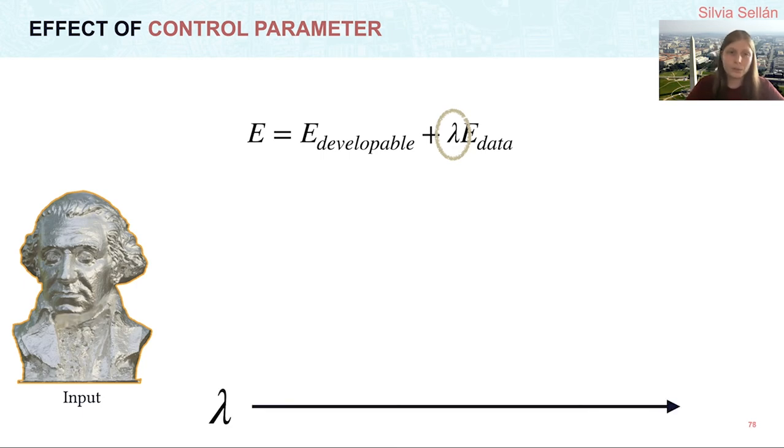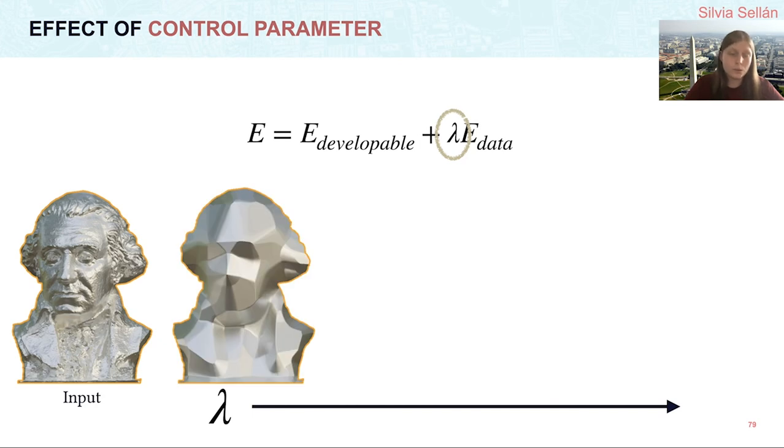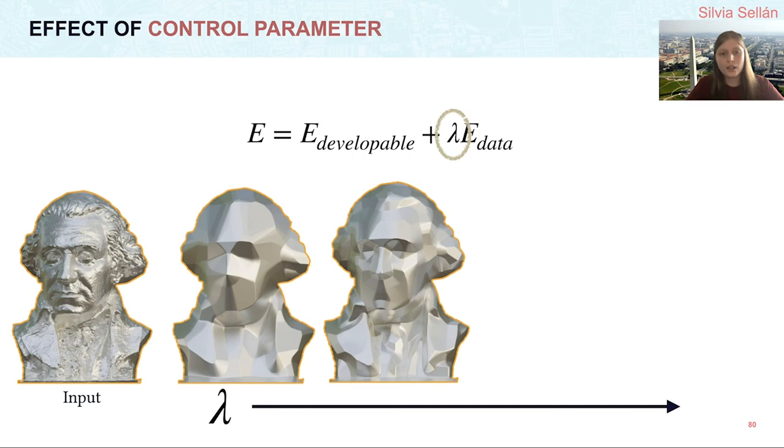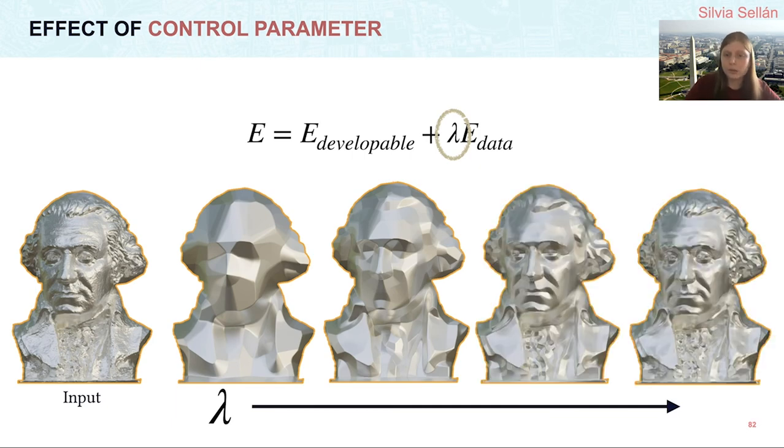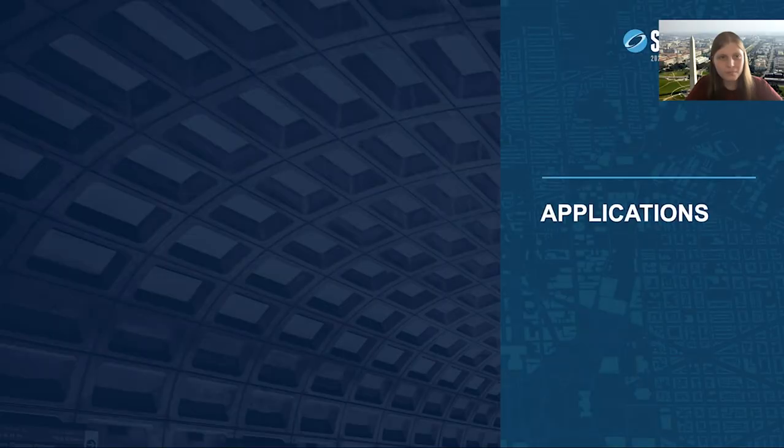Indeed, that is what we see for this input. We start from a very small lambda, which produces a small number of patches and is very far from the input, and as we grow lambda, the number of patches and the similarity with the input both increase.